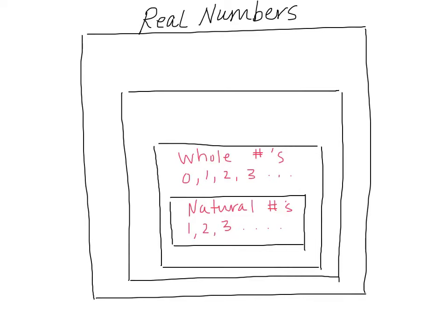The set beyond that is called the integers. Integers are those whole numbers, but they also include their opposites. So where before we would have had just a positive 3, now we would have a negative 3, negative 2, negative 1, 0, and so on.